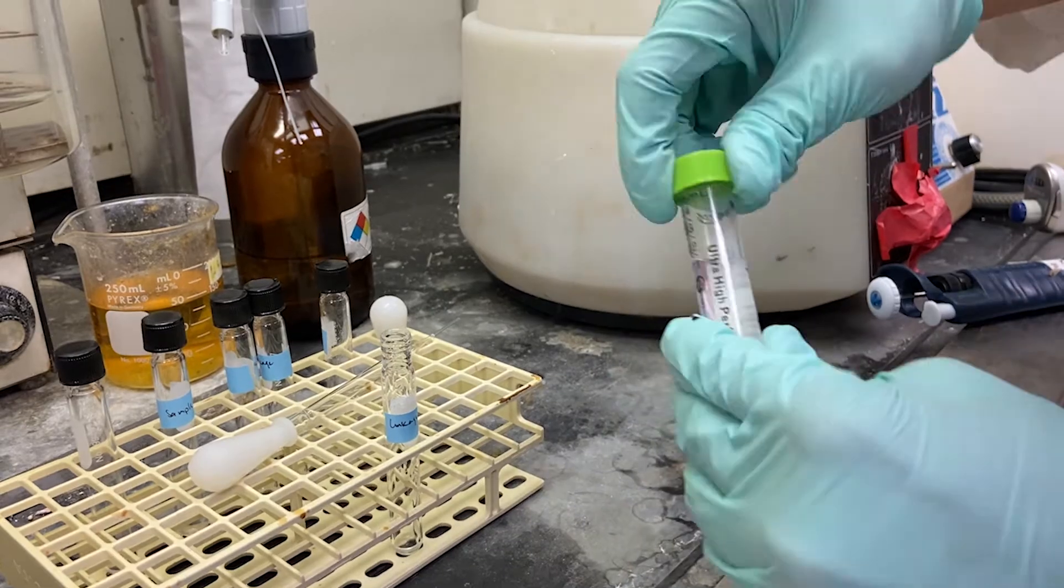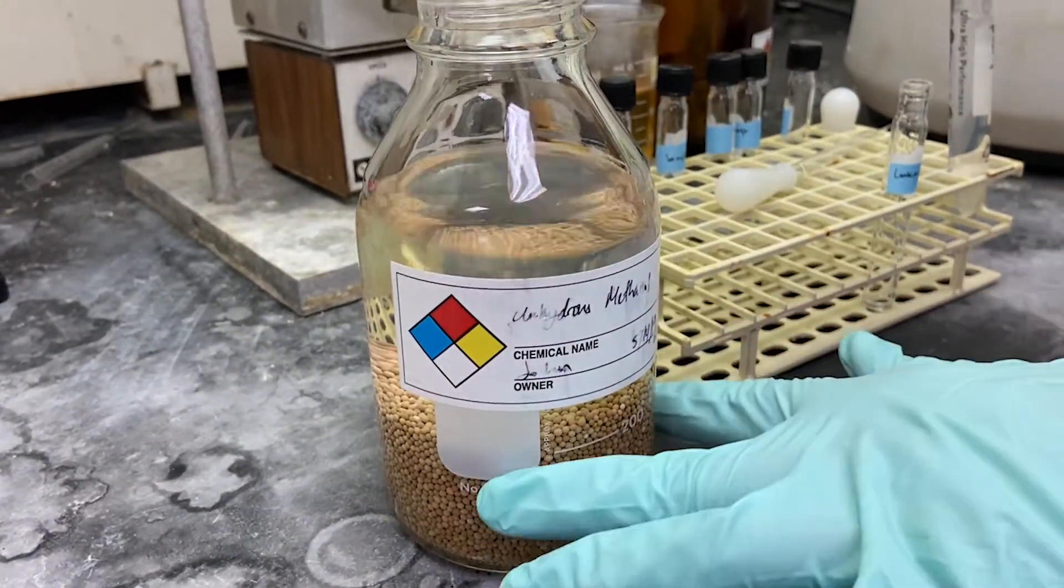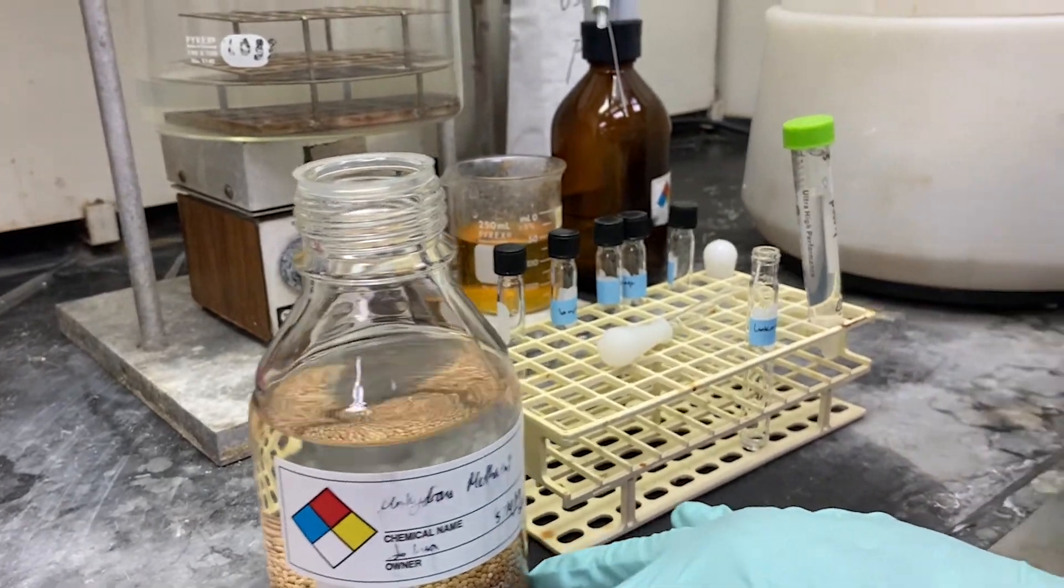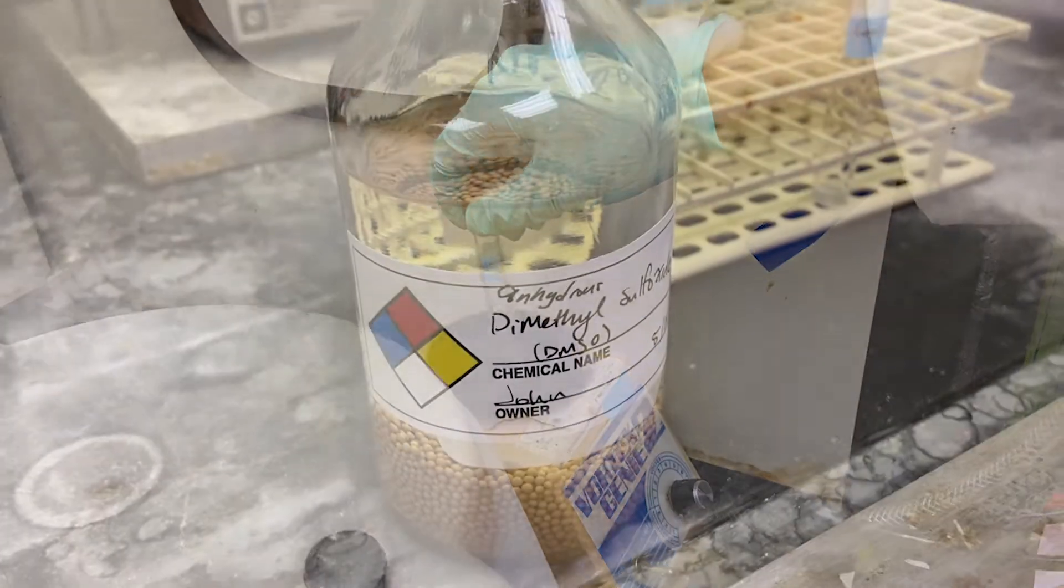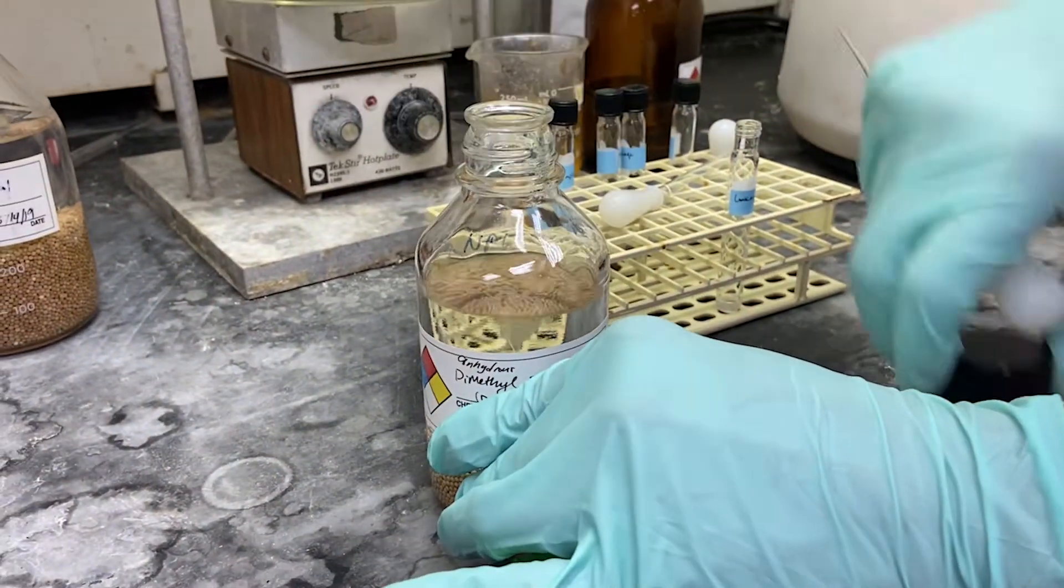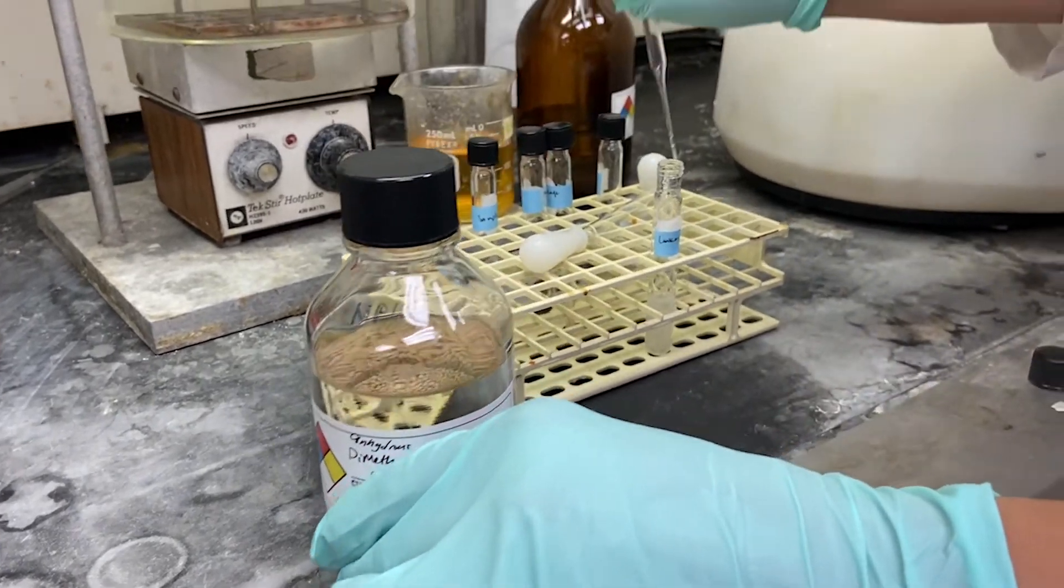First, we take 100 microliters of 50% weight-by-weight sodium hydroxide and add 200 microliters of methanol and vortex for three to five seconds. Next, we add two milliliters of DMSO, vortex for five seconds and centrifuge for 30 seconds to pellet the base.